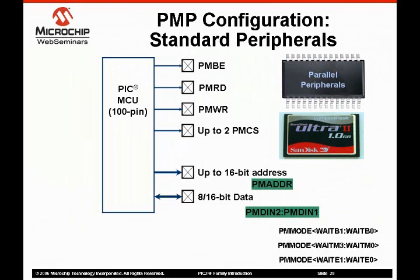To interface with slower memory, wait states can be introduced through the wait B1 and wait B0 bits in the PM mode register. This slows down the signals through the PMP module.